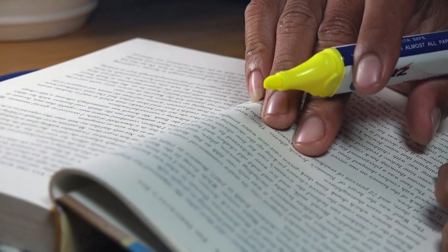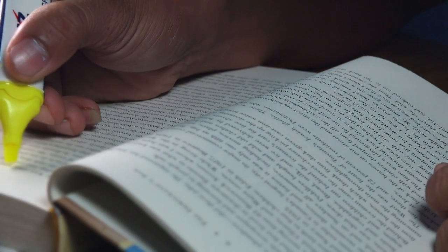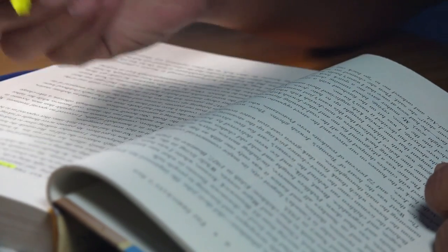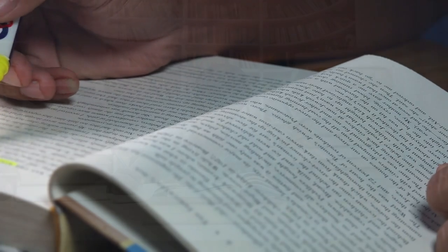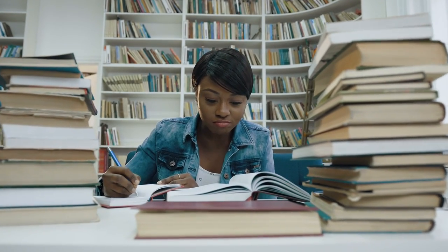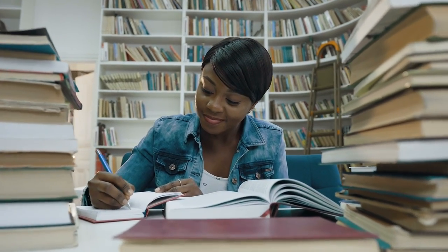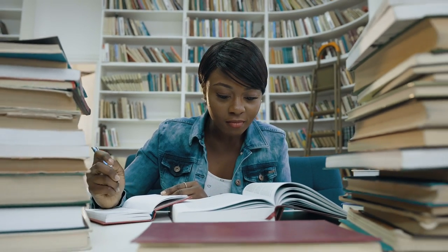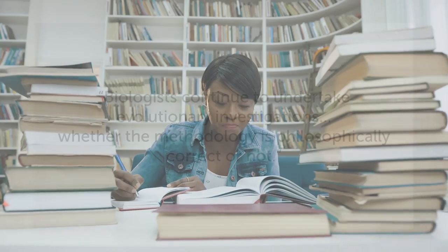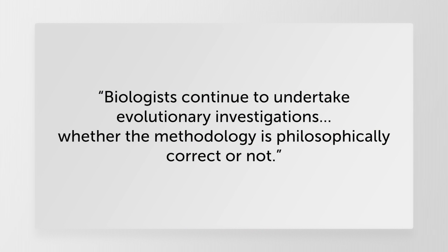Another example of evolutionists speaking frankly about evolution and the truth of its claims is found in a college textbook on evolution. After discussing whether or not evolution follows the scientific method, the author concluded with these amazing words: Biologists continue to undertake evolutionary investigations, whether the methodology is philosophically correct or not.